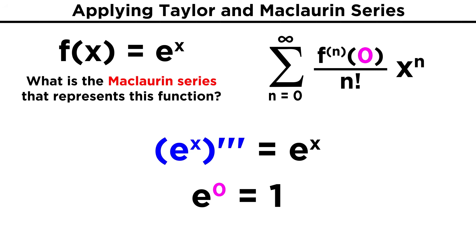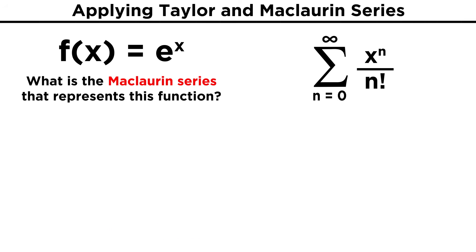So no matter what derivative we are looking at, we just have e to the x. Also, we are plugging in zero every time, and anything to the zero power is one. That means any derivative of this function evaluated at zero will give us one, so this entire term can just go away, leaving us with x to the n over n factorial.